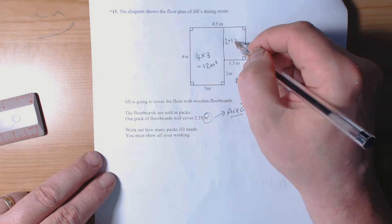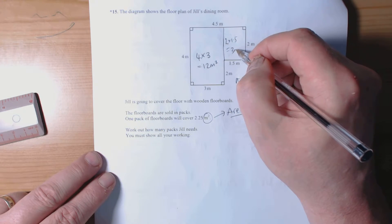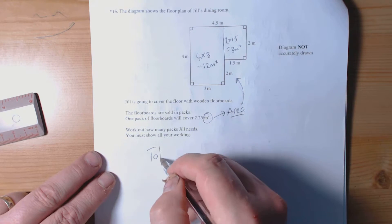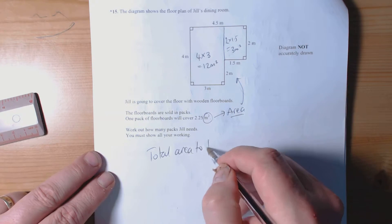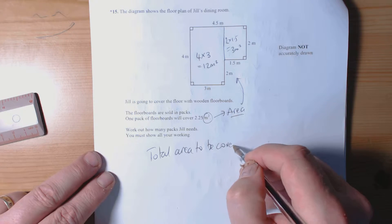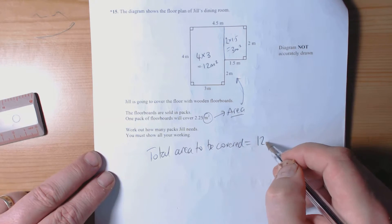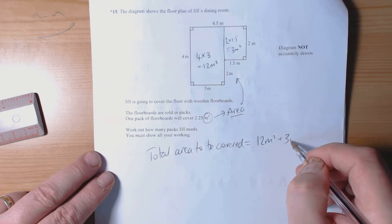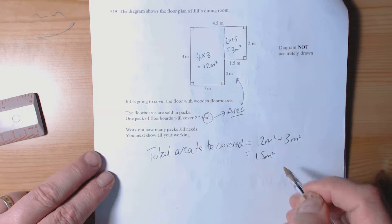So total area to be covered equals 12 square meters plus 3 square meters equals 15 square meters.